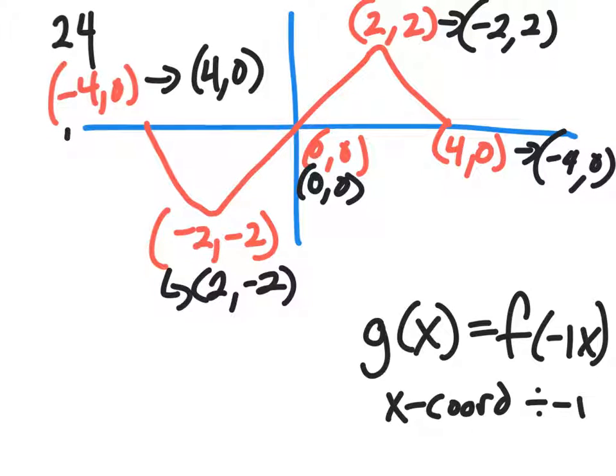Let's plot these points. So we're looking at 4, 0. Okay, that's there. 2, negative 2 is going to be like there. 0, 0. Negative 2, 2, and negative 4, 0. If I graph this...